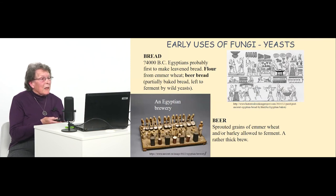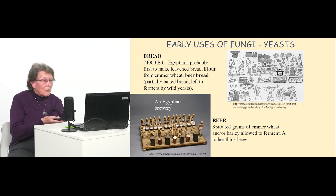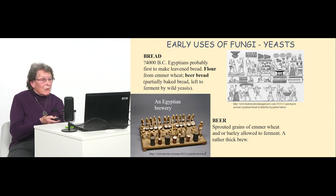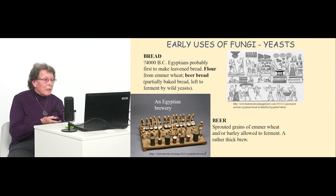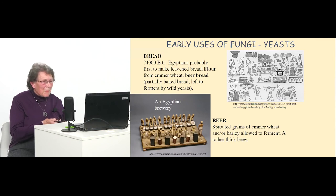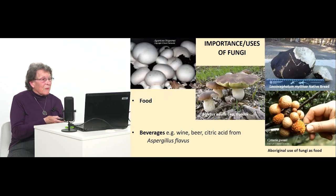The Egyptians are probably the first to make an alcoholic drink — probably beer rather than wine. Here's a model of an Egyptian brewery: they used sprouted grains of emmer wheat and barley to make a fairly thick brew. We also use fungi for food — the button mushroom, Boletus edulis (porcini), which have now appeared in the Adelaide Hills, and fungi consumed by Aboriginal Australians including the great tuber Laccocephalum mylittae — a native bread that forms underground after fire.